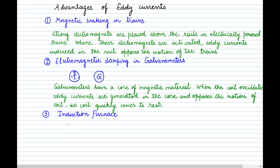The third use is in induction furnaces. Eddy currents generated by electromagnetic induction produce heat — energy is locked in the form of heat given by P = I²R. In an induction furnace, a high-frequency alternating current is passed through a coil surrounding the metal. The induced eddy currents within the metal generate very high temperatures — high enough to melt the metals. So eddy currents are used to melt metals in induction furnaces.